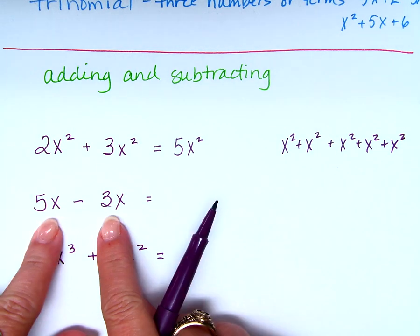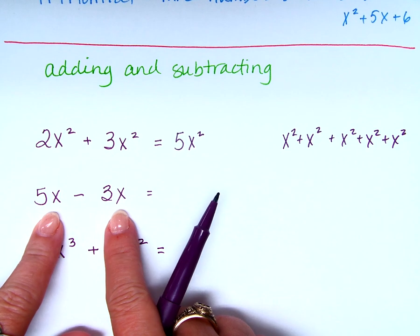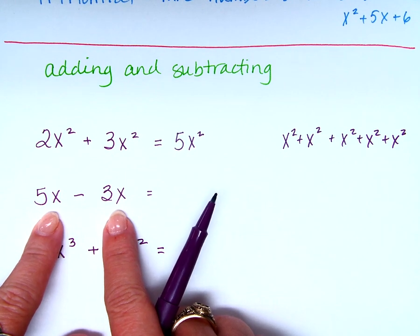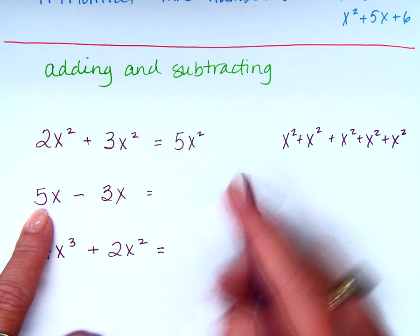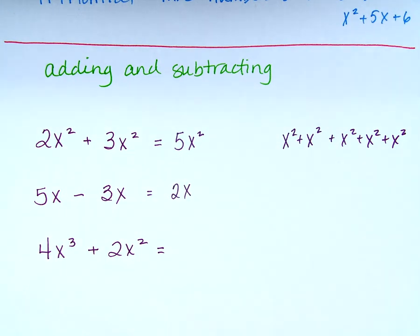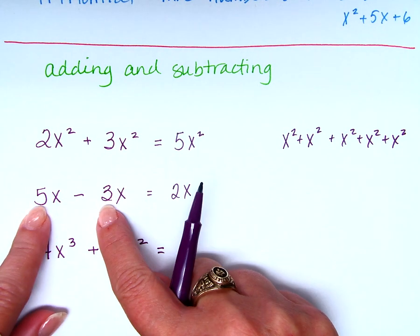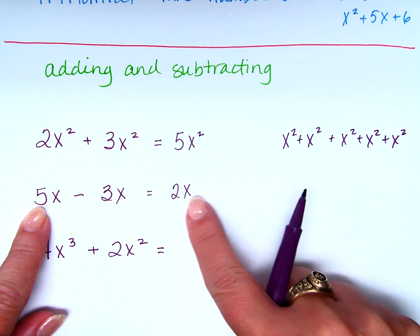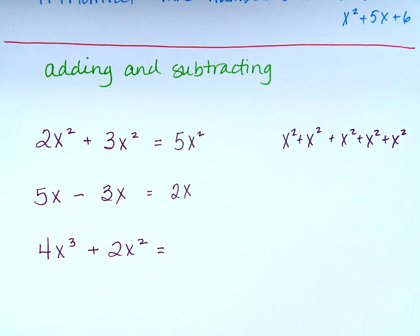Are these like terms? 5x minus 3x. Yes, they are like terms. We only mess with the coefficients, so I get 2x. What's the most popular wrong answer? 2. The x doesn't go away. There's 5x's and I took 3 away, so there's 2x's left.